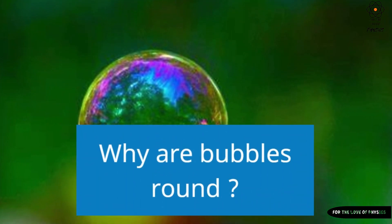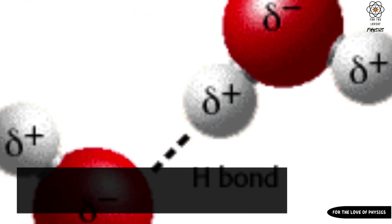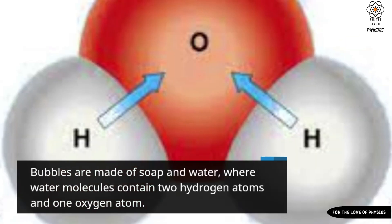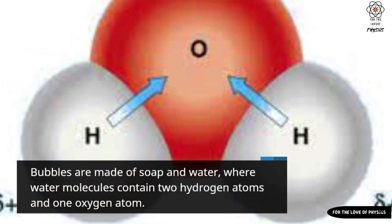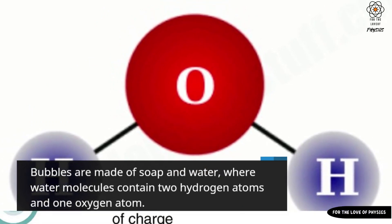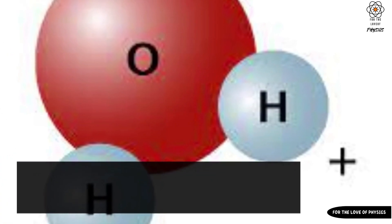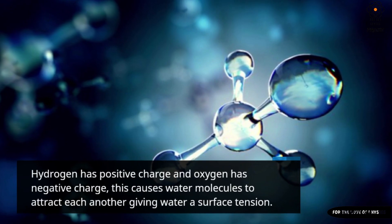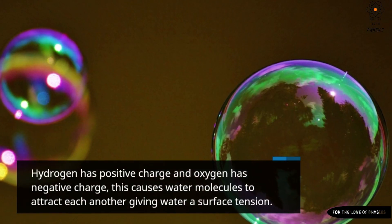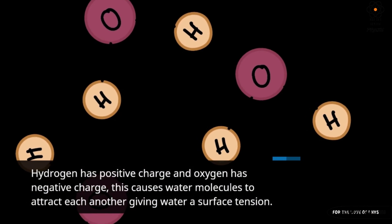Why are bubbles round? Bubbles are made of soap and water, where water molecules contain two hydrogen atoms and one oxygen atom. Hydrogen has positive charge and oxygen has negative charge, and this causes water molecules to attract each other, giving water a surface tension.